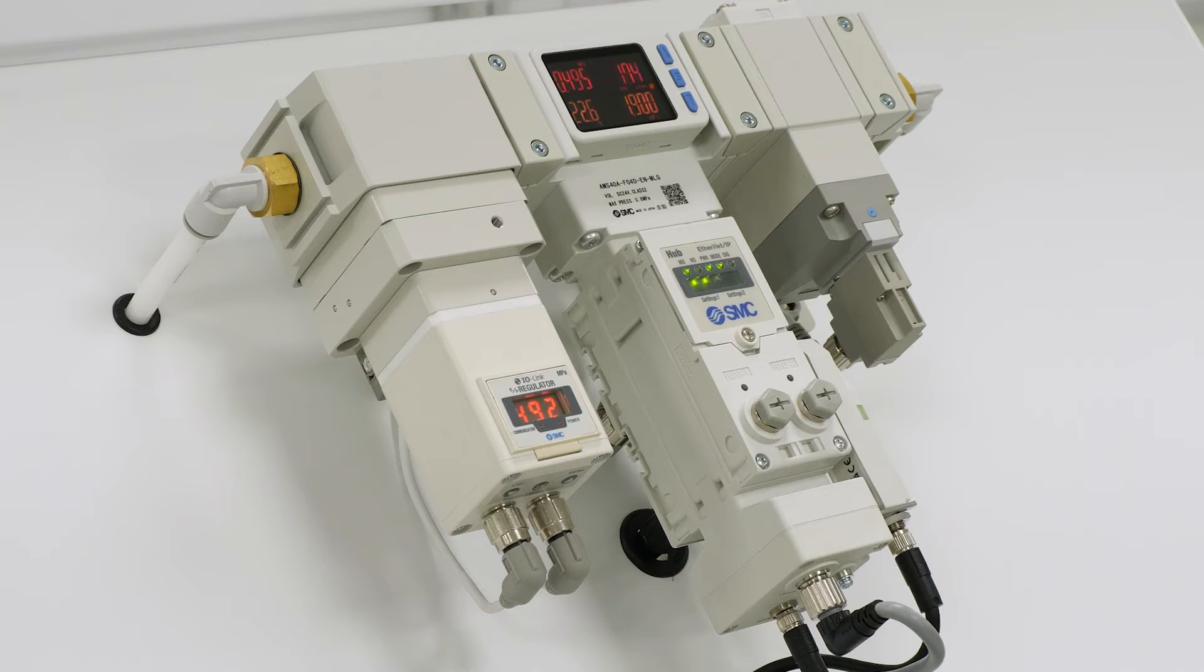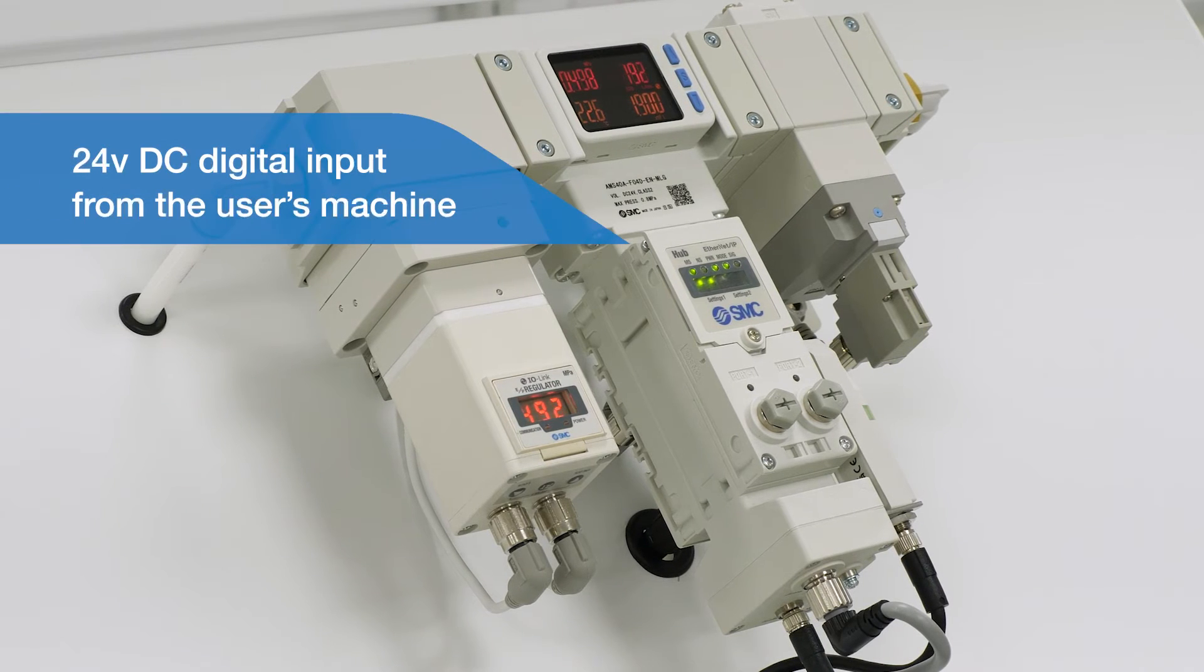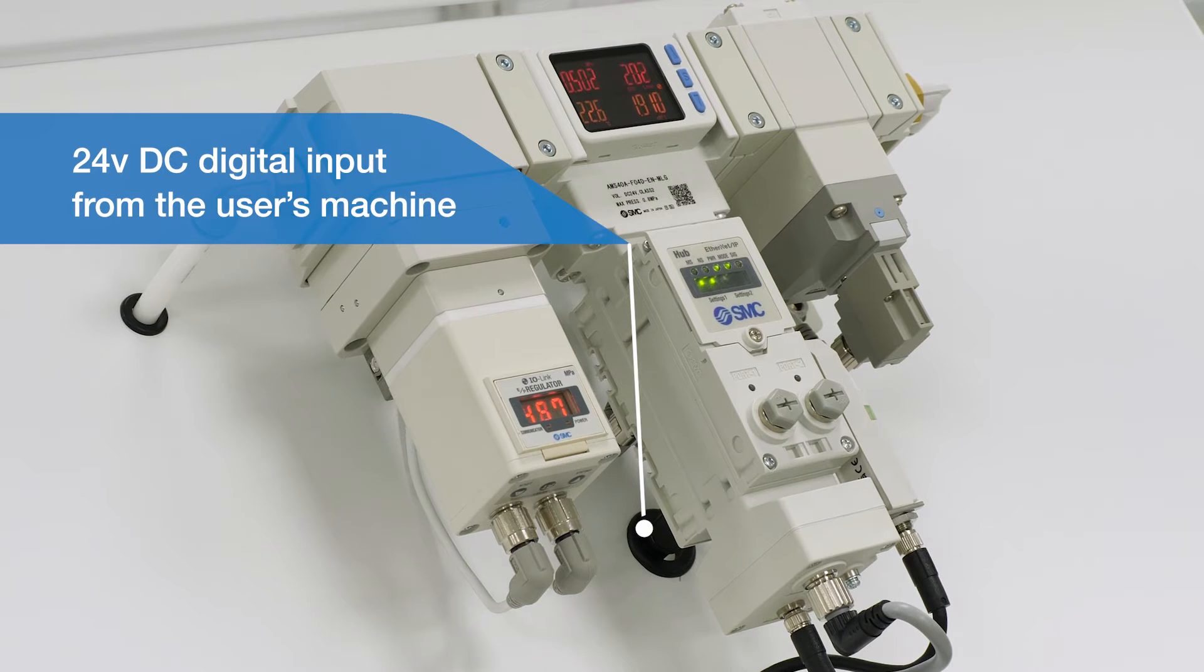In addition, a signal to initiate the standby function should be received by the air management system. This can be provided remotely via a network communication signal, or alternatively a directly wired 24 volt DC digital input or logic high from a contact on the machine, such as a PLC output or relay. This method is demonstrated later in this video.